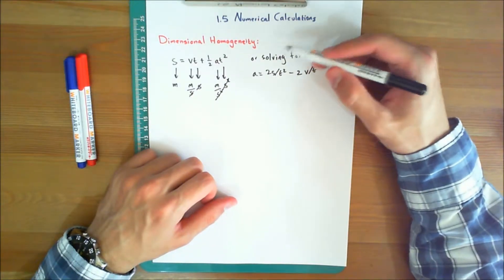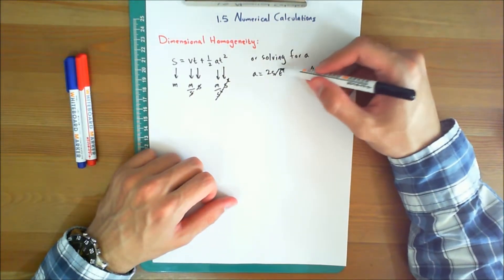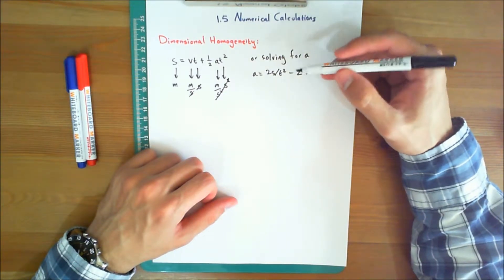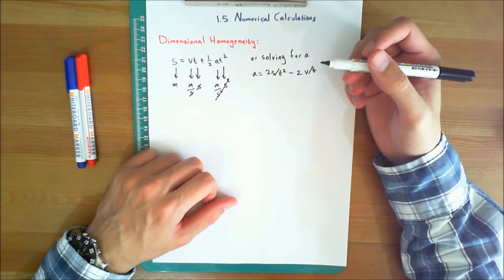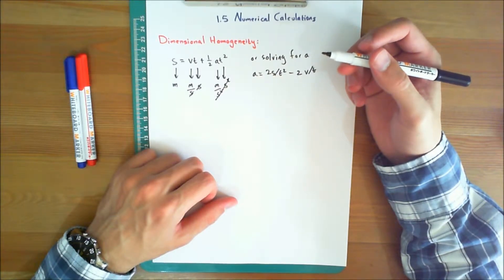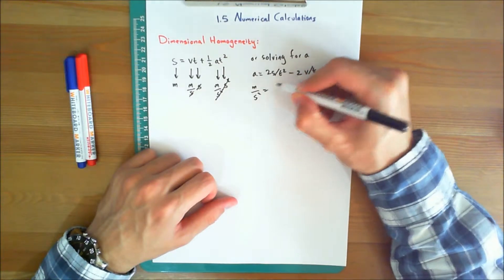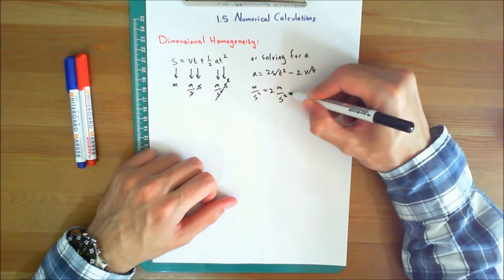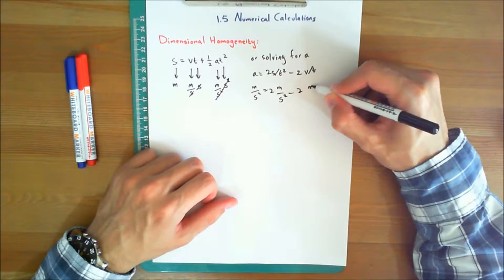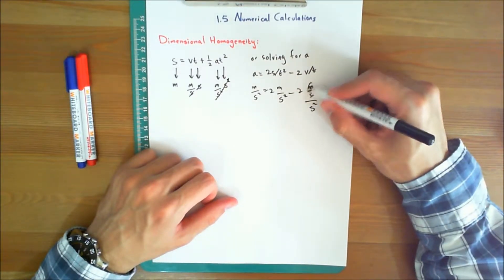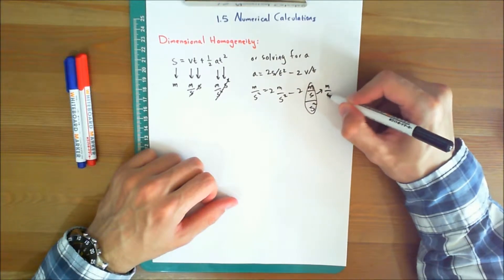Or, solving for A, A is equal to 2 times S over T squared minus 2 times V over T. The terms are each expressed in units of meters per second squared. Since 2 meters per second squared minus 2 meters per second over second squared, this will give you meters per second squared.